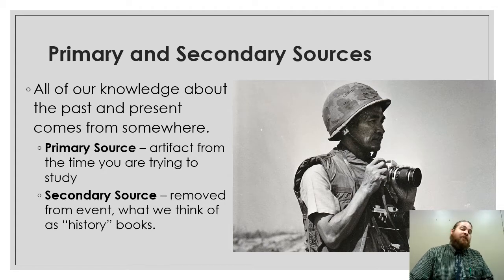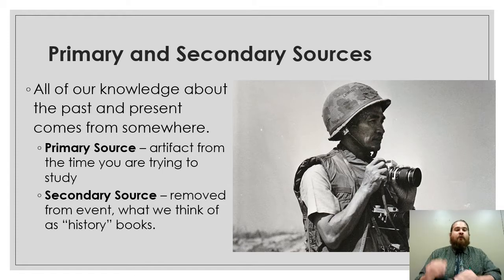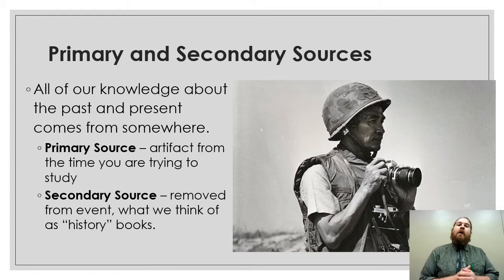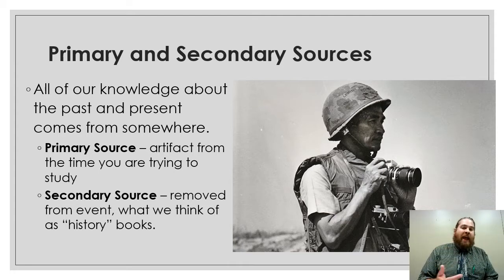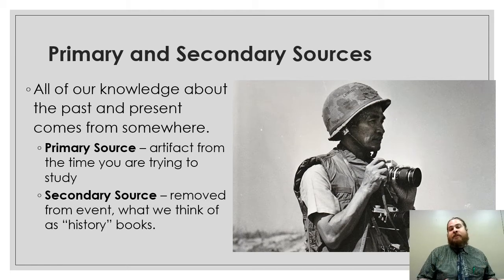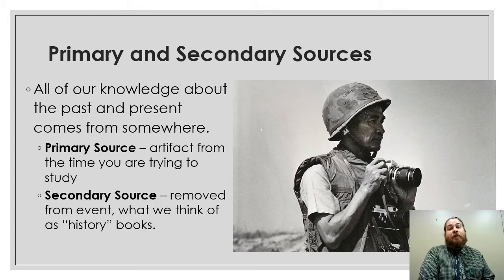Secondary sources — think about history books or the textbook, where removed from the event, people kind of think about, based on all these different sources, what happened. A really great example of a secondary source would be an encyclopedia or a textbook or something like that. It's very important to be able to distinguish between both because you have to read them very differently.